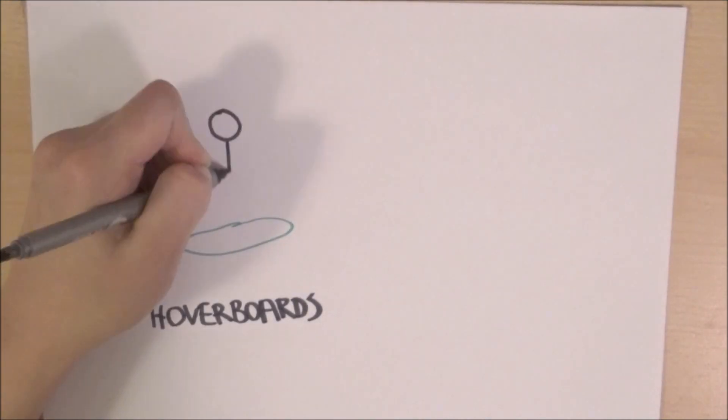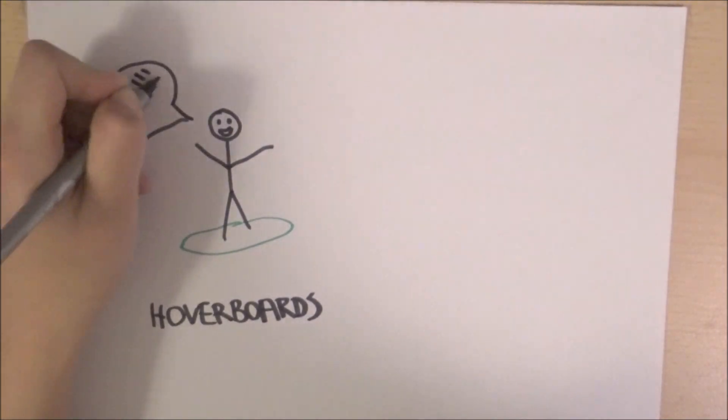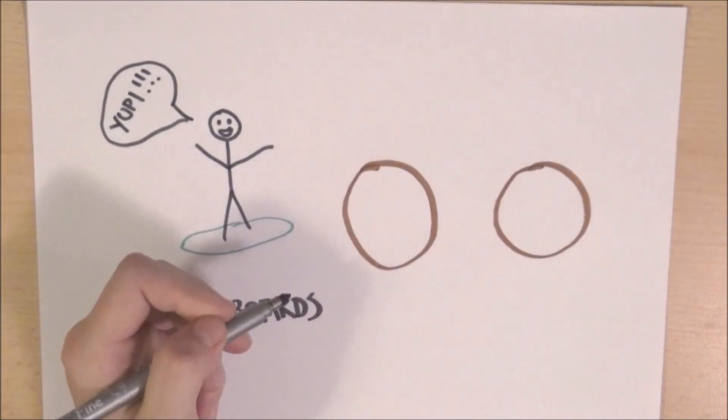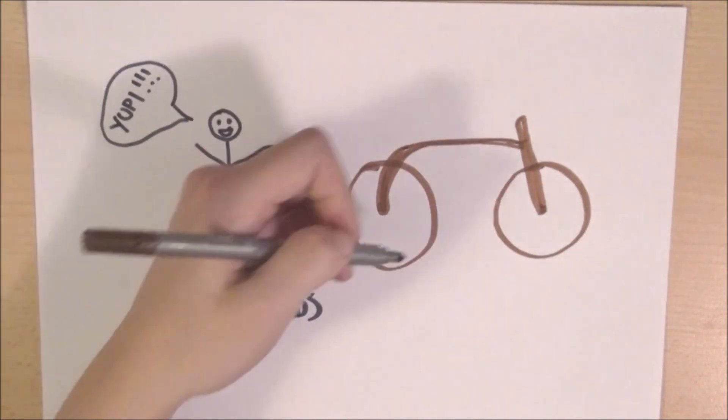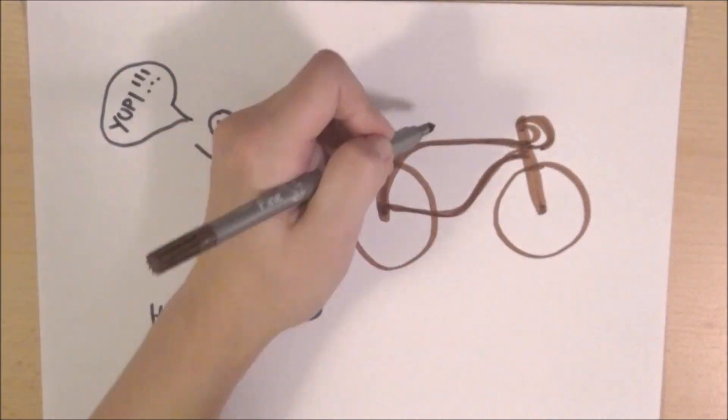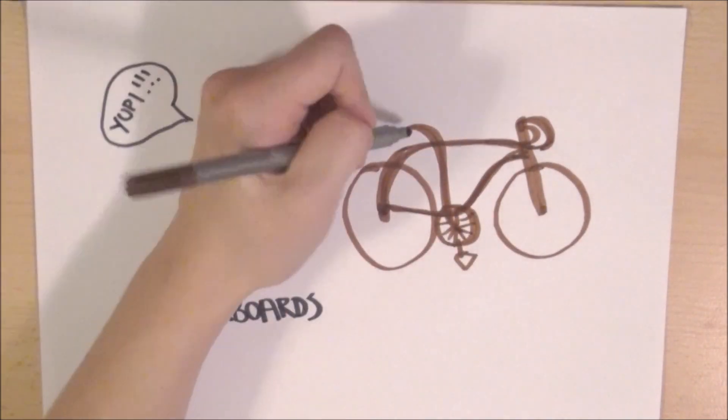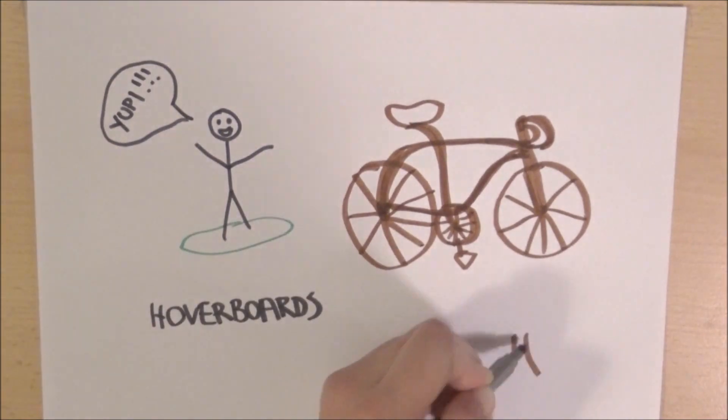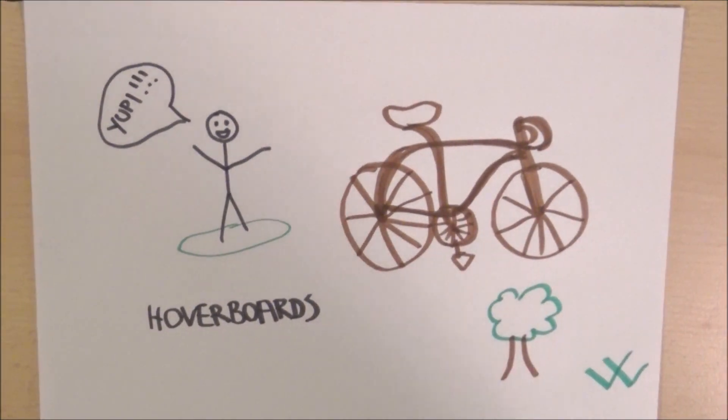Around cities, we travel by hoverboards that also use magnetic levitation. They look like skateboards but without wheels. Another option is wooden bicycles. They are used more commonly because they don't need magnetic roads like hoverboards. They are made from recycled wood. Other vehicles are not allowed in city areas.